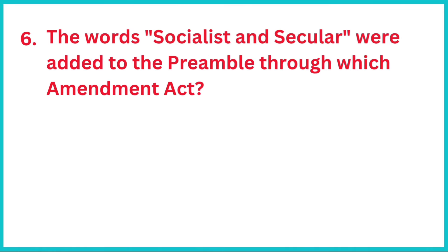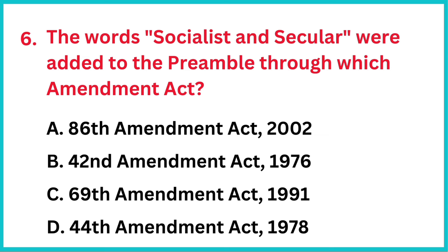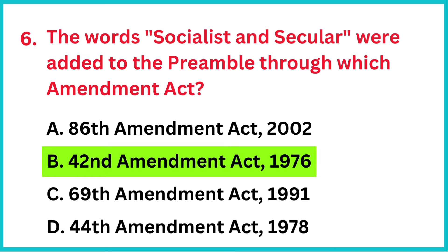The words 'socialist' and 'secular' were added to the preamble through which amendment act? Correct answer is option B, 42nd Amendment Act 1976.